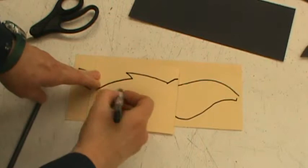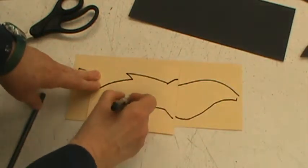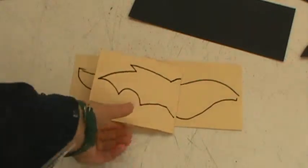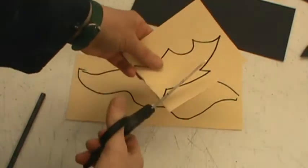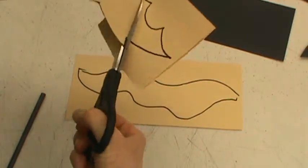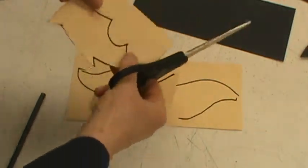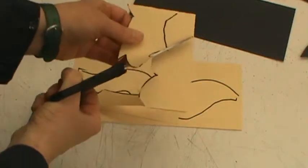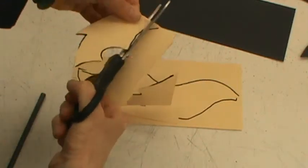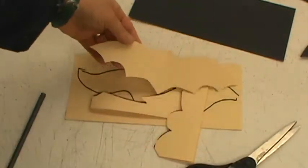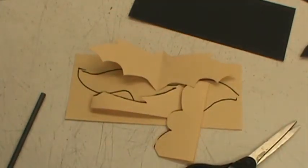I'm going to make it here. Draw once. Cut once. And there's a symmetrical set of bat wings.